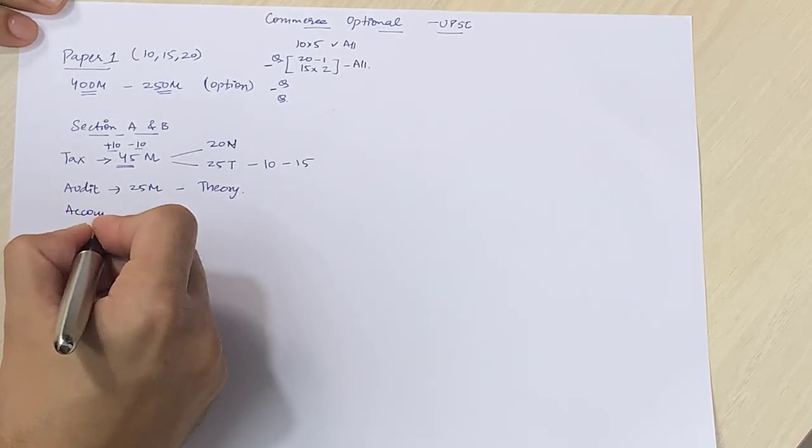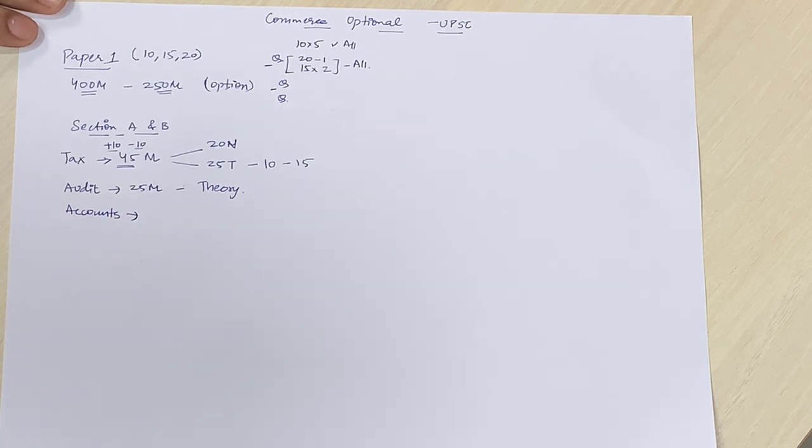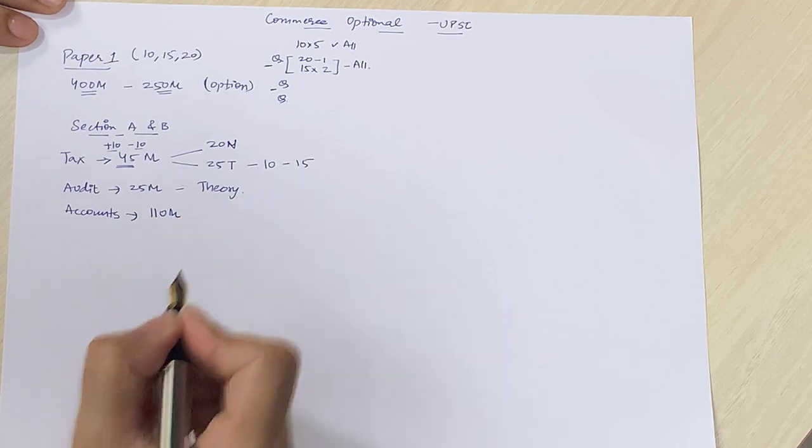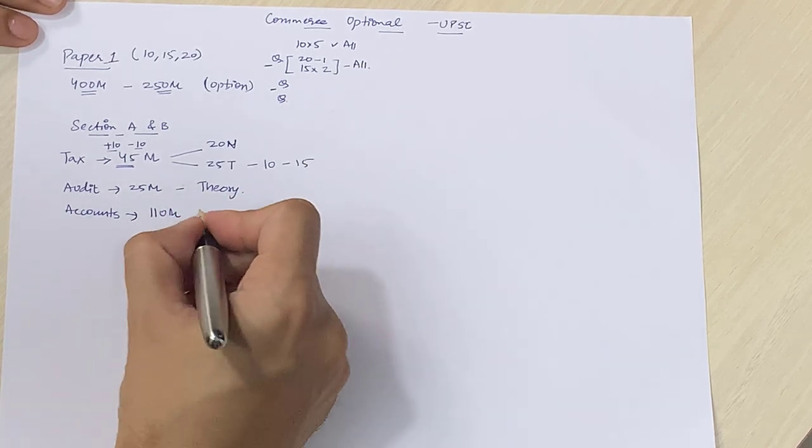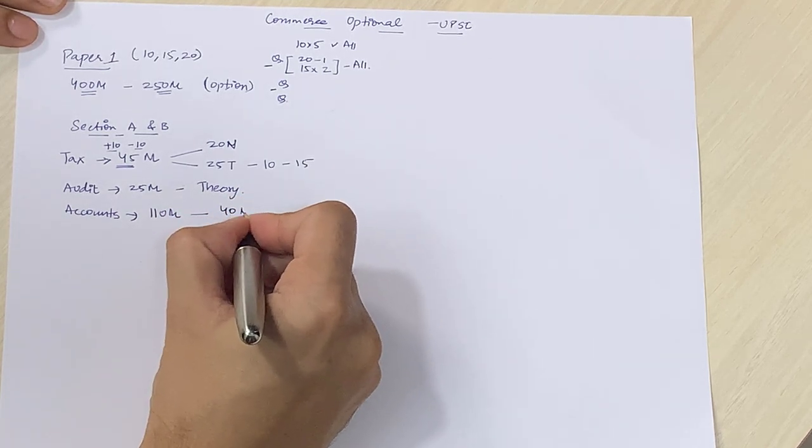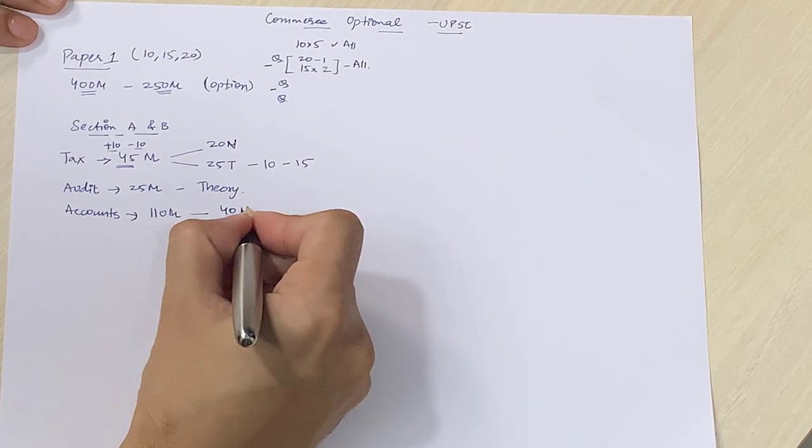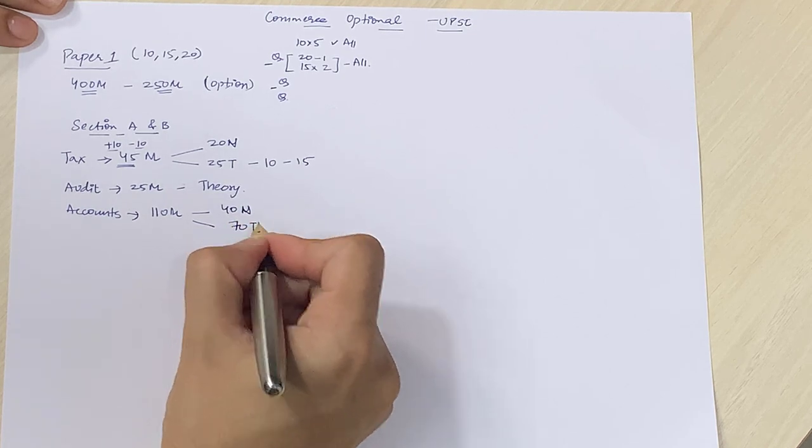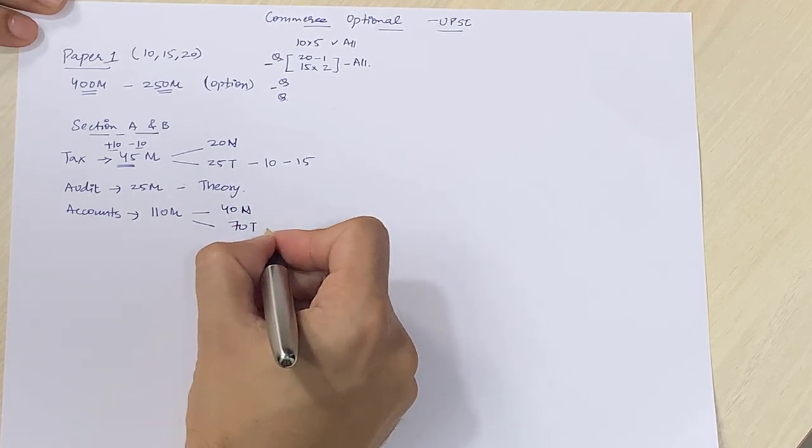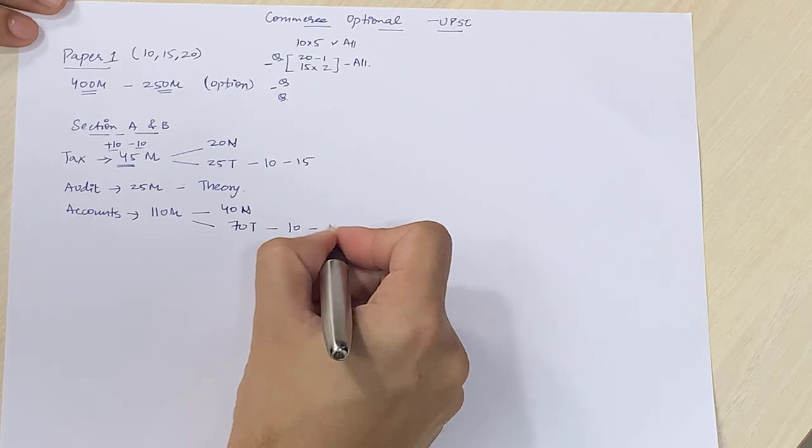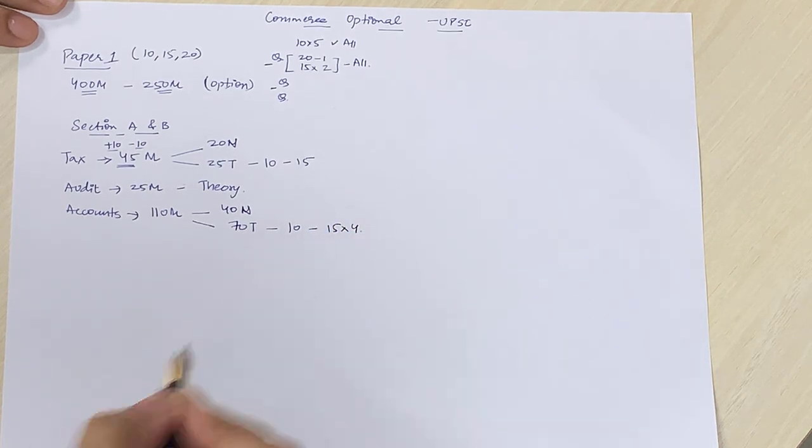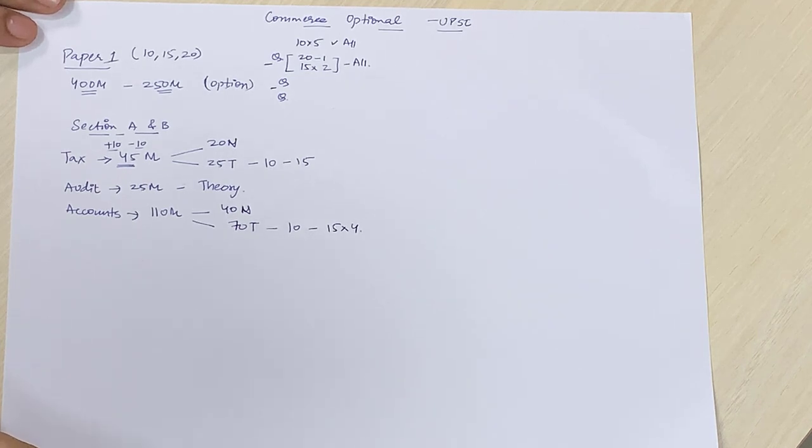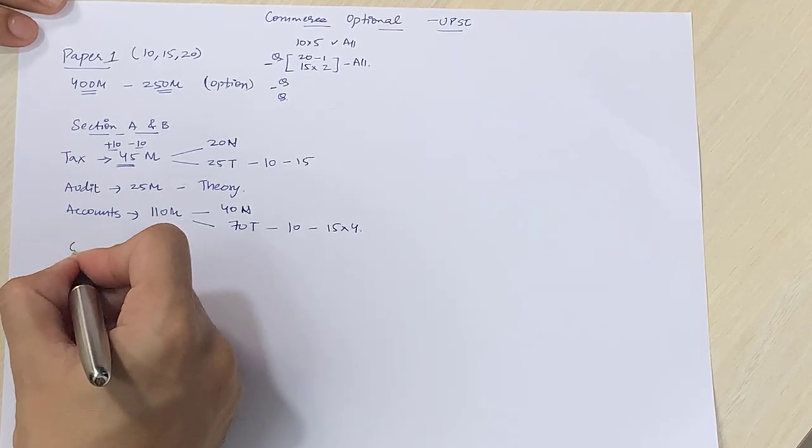Third hain accounts, which includes corporate accounts and financial accounts. Which is very heavy. Total 110 marks ke questions ismeh poochhe jaate hain. Out of which, 40 marks worth of questions are numerical. 20 number ke 2 questions hain jo numerical hoongay. 70 marks ke joh hoongay woh theory hoongay. Jis meh ki 10 number ka yi question. Aur 15 number ke 4 questions. This is the normal breakup. Now as I said, this is the average. This average can change over time.